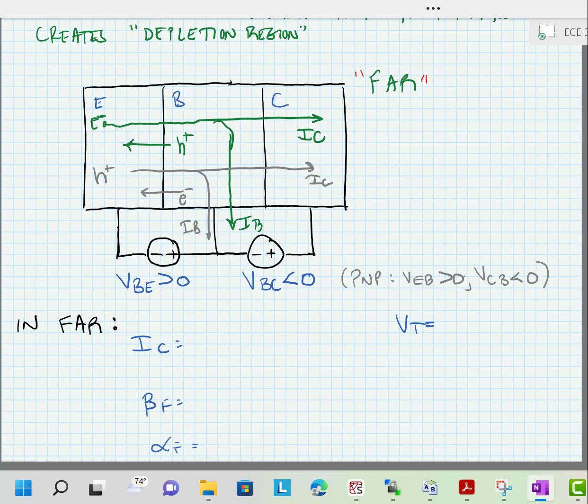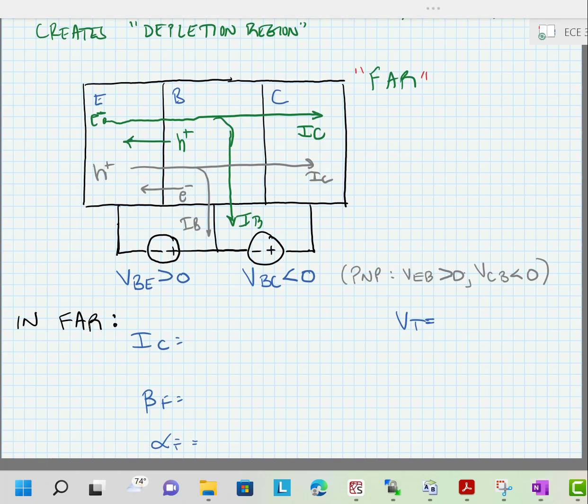All right, in the forward active region, we can write our current expression. It's just a diode current. So here we have IC is equal to IS, saturation current, times E to the VBE over VT.